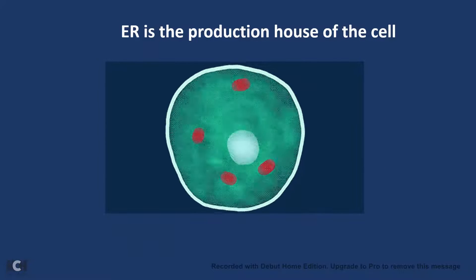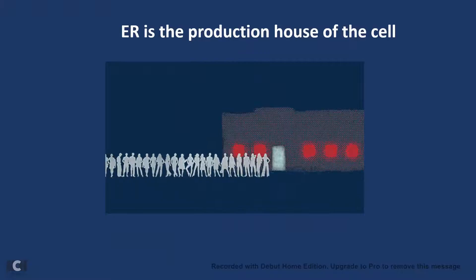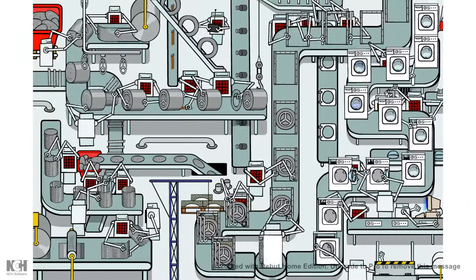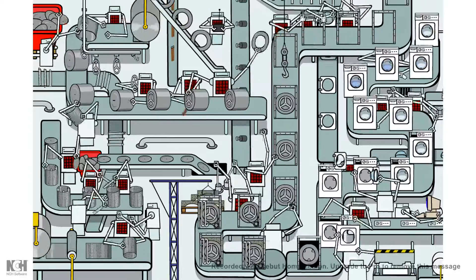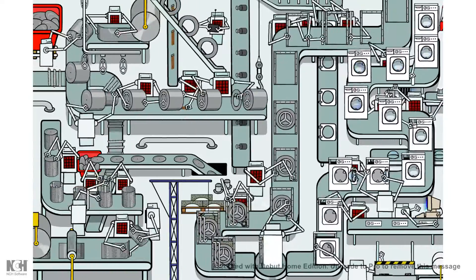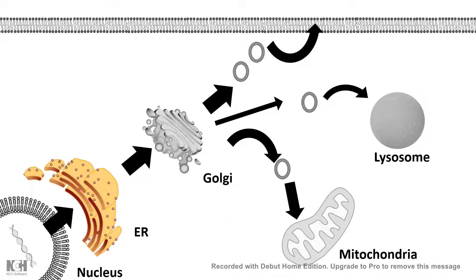The endoplasmic reticulum is a production house of the cell. There are several machineries which fold proteins and monitor quality, so quality control and production happen simultaneously in the ER. Once proteins are properly folded and their quality is monitored, they can move out to several locations — first to the warehouse, the Golgi apparatus, and from there to different organelles or secreted out.